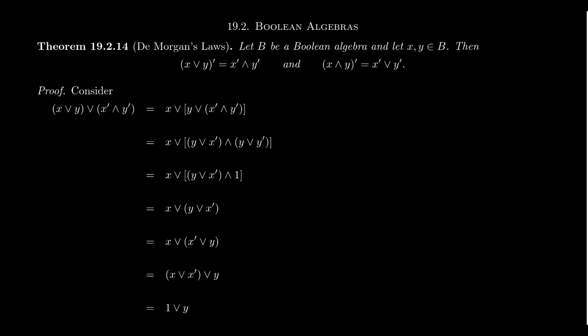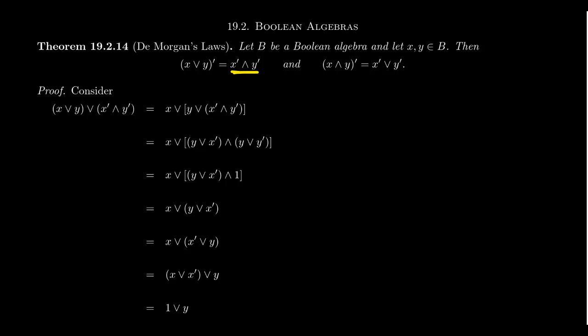So that's exactly what we're going to do. We're going to take X join Y and join it with X complement meet Y complement. If these are in fact complements, an element join its complement should equal the maximum element one. And then we're also going to show that X join Y meet X complement meet Y complement equals zero, because that's exactly what complements do. So we're going to prove that this element acts like the complement, and the second equality follows by duality. So let's start: X join Y join X complement meet Y complement — we want to show this equals one.